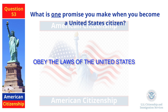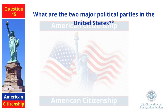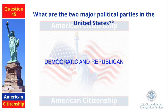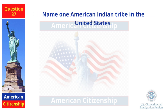What is one promise you make when you become a United States citizen? Obey the laws of the United States. What are the two major political parties in the United States? Democratic and Republican. Name one American Indian tribe in the United States. Cherokee.